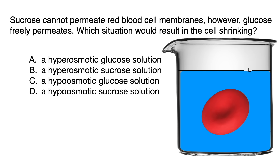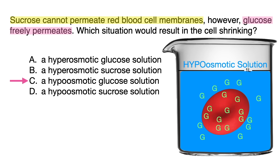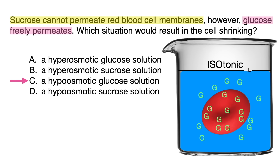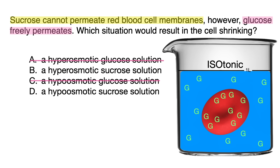Now back to the question with our trusty beaker on the side. It's asking which answer choice would cause the cell to shrink. It says sucrose cannot permeate red blood cell membranes, but glucose can. So if glucose can permeate the cell membrane, then in a hypoosmotic glucose solution — lower glucose concentration in the surrounding solution — glucose will just move from inside the cell to the surrounding solution until isotonic, without water moving in or out and thus no shrinking or swelling, which eliminates C. A similar effect applies to a hyperosmotic glucose solution, so we can also eliminate A.